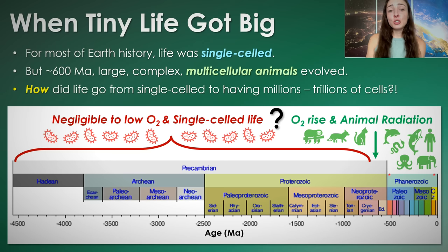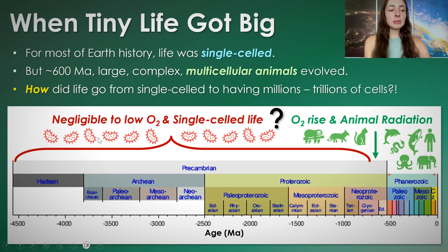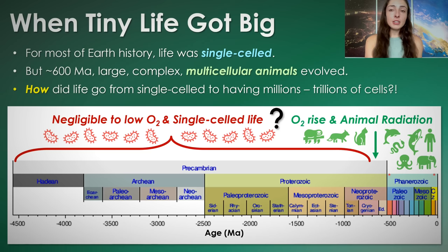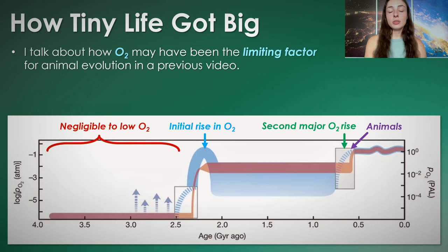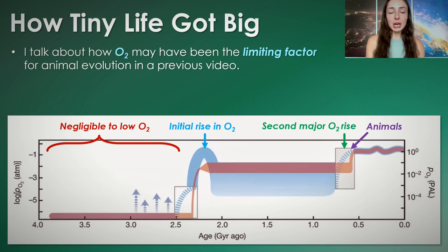So how did life go from single-celled organisms to organisms having millions to trillions of cells like ourselves? There's a clue in this slide: when it was just single-celled life, there were negligible to low oxygen levels, whereas once oxygen levels rose to a certain level, animal evolution and diversification occurred. It's thought that molecular oxygen — O2, the thing that we breathe today — was much lower in concentration on earlier Earth.